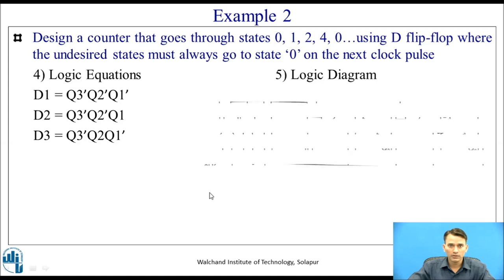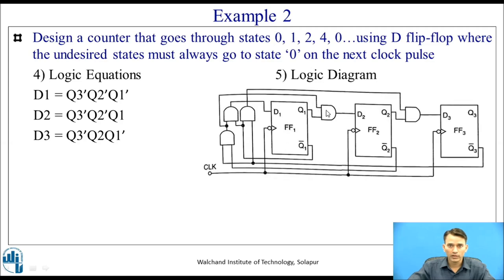Based on these logic equations, we draw the logic diagram with appropriate inputs. Q3 bar, Q2 bar, and Q1 bar are connected via AND gates. D2 takes inputs Q3 bar, Q2 bar, and Q1. Q1 connects from the flip-flop output, and Q3 bar and Q2 bar come from the AND gate. For D3, Q2 and Q3 bar and Q1 bar are connected from their respective sources. In this way, we can design any such synchronous counter.